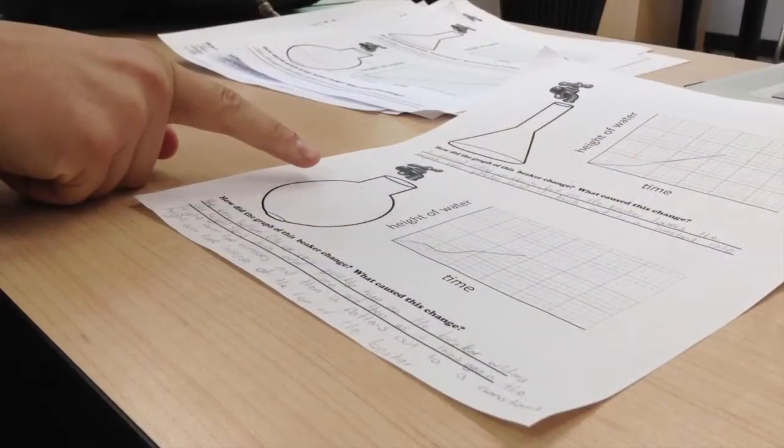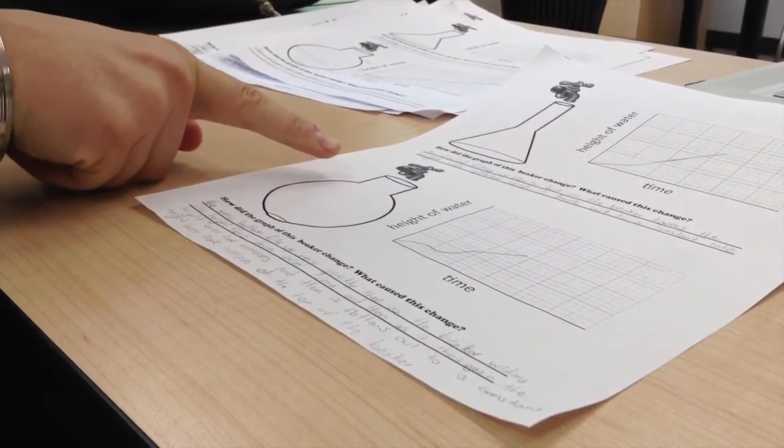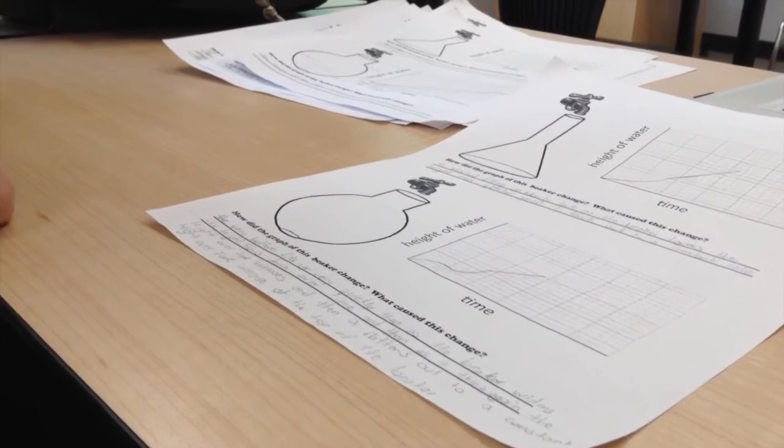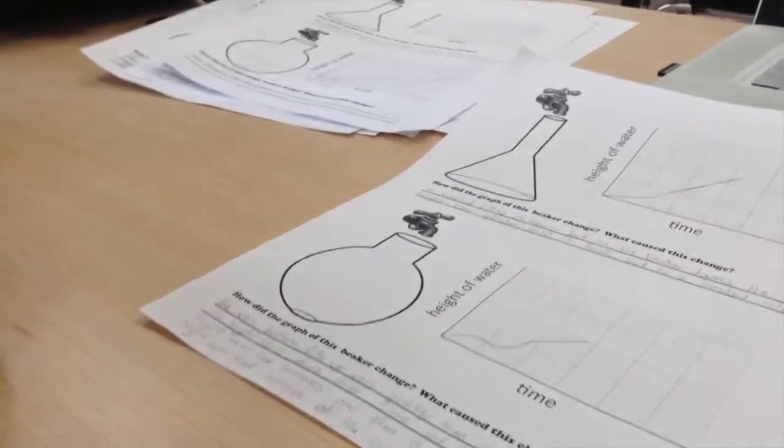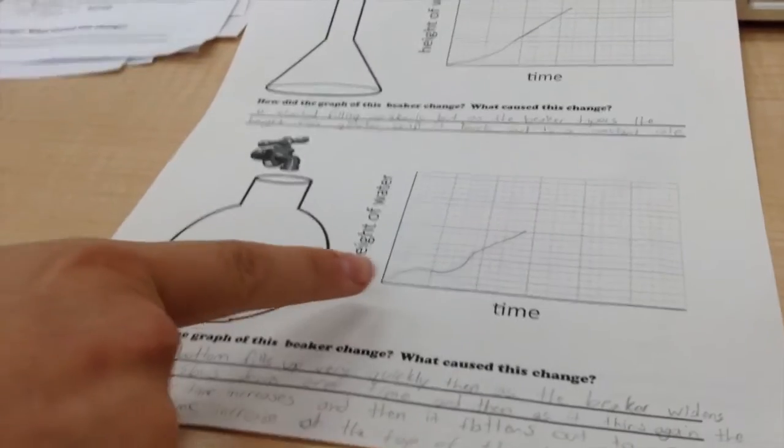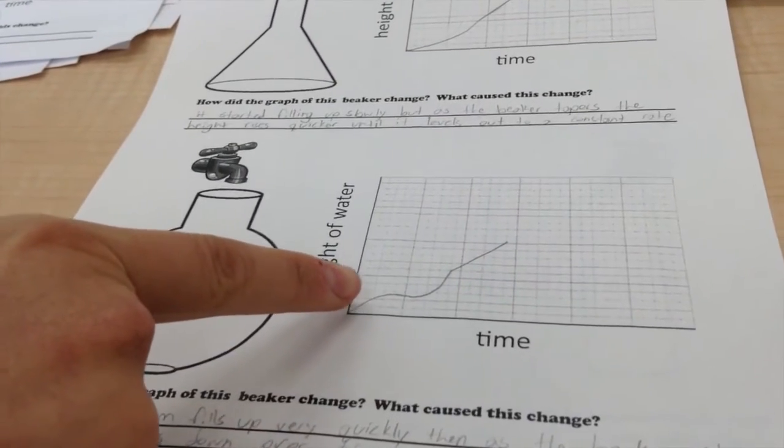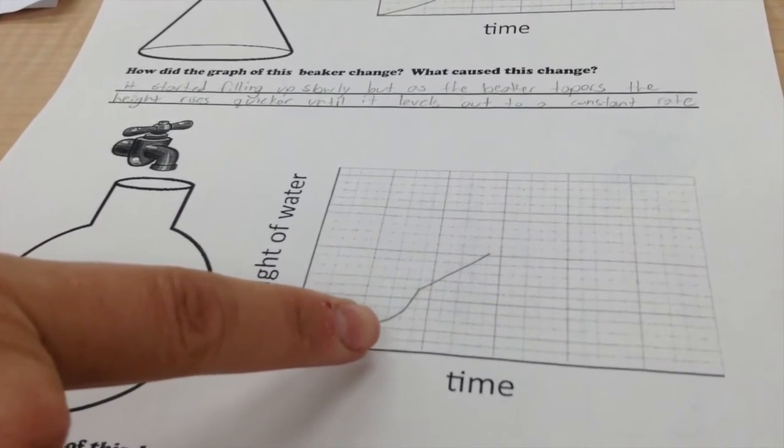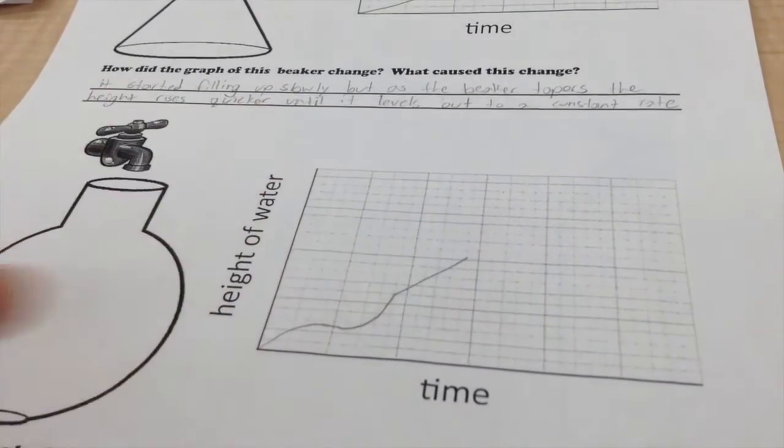So they understand what's happening with the water in the shape of the beaker, but transferring that onto the graph, we can see that this height over time is increasing, and somehow the height of the water has decreased, and then it continues to increase.